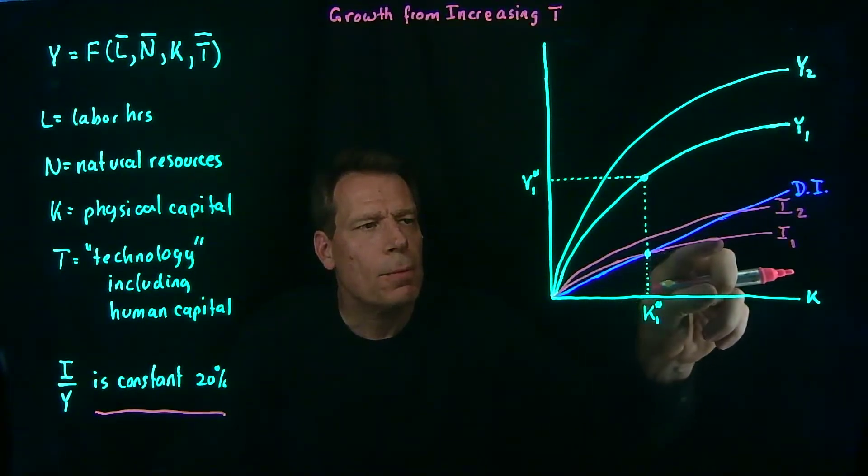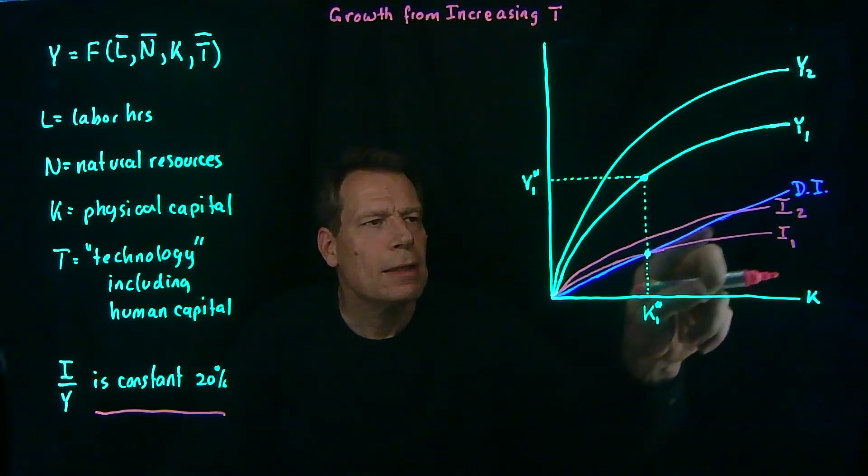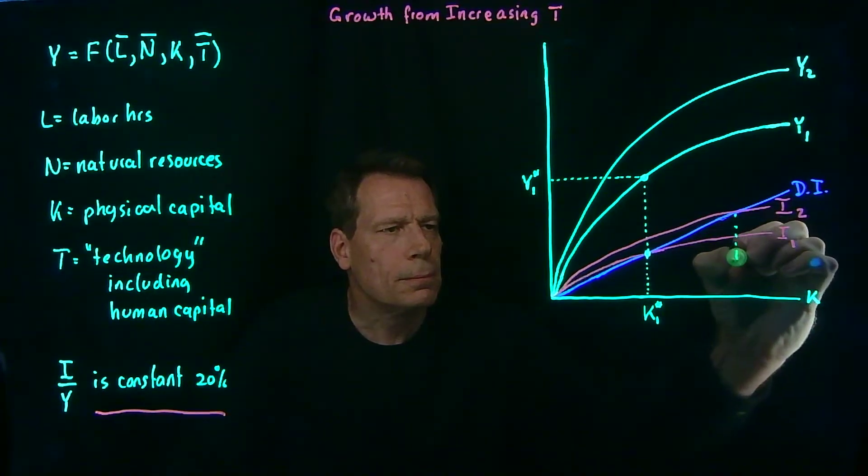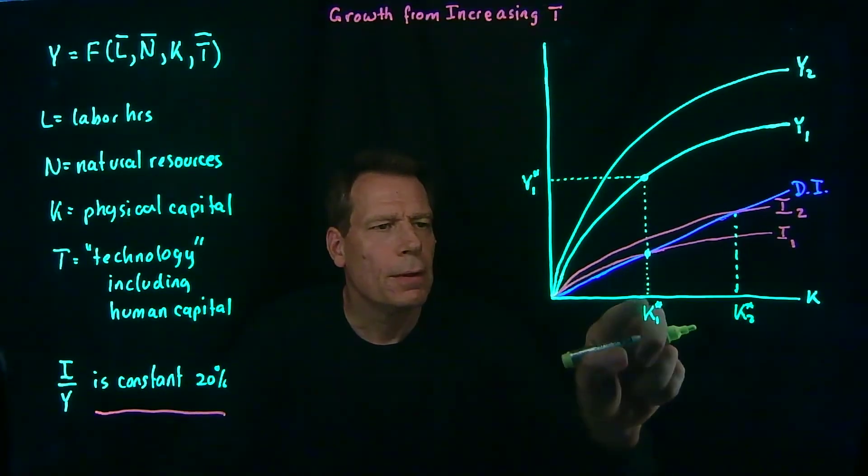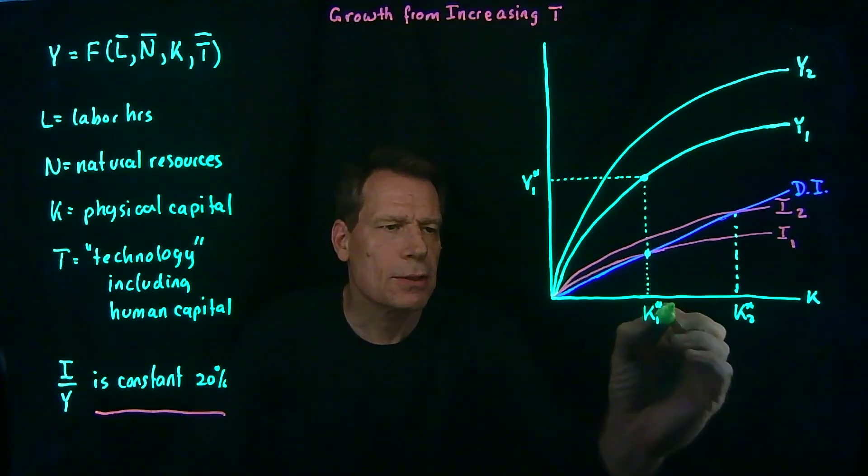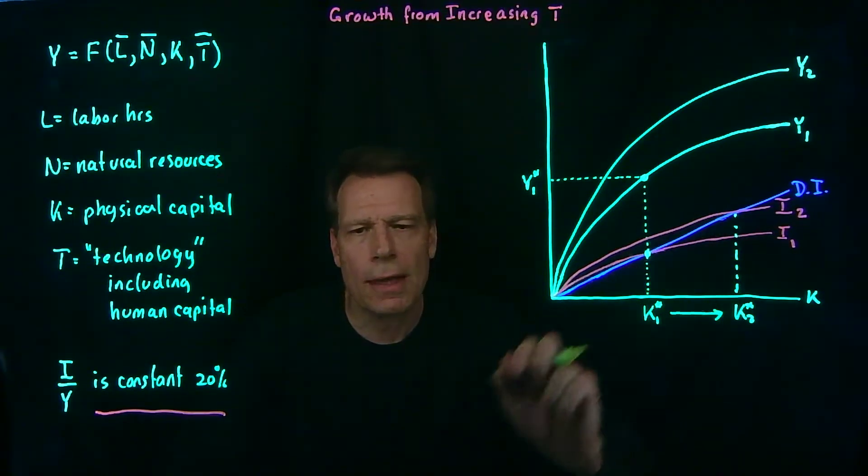So the upward rotation of the investment curve will result in a new steady state level of capital. If we stayed at the original level of capital, we would be investing more than what's necessary to keep capital constant. But that means that capital is going to increase. And it's going to keep increasing until we get to that new intersection.